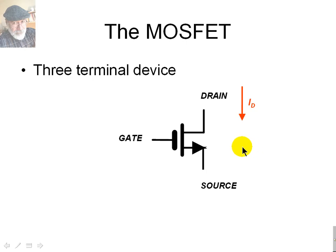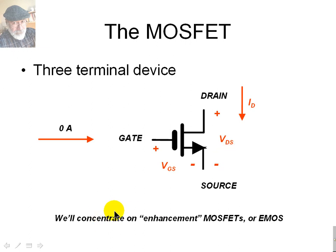As with the JFET, the gate current is zero, and the voltages VGS and VDS are defined the same way. We'll concentrate on the two possible MOSFETs in the so-called enhancement MOSFET, or simply EMOS.